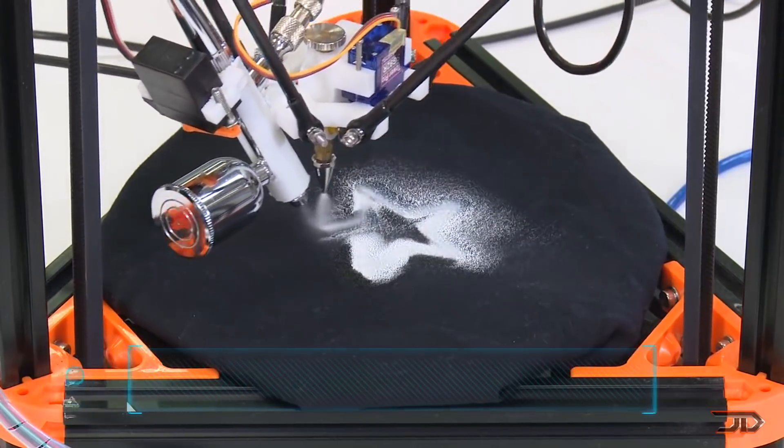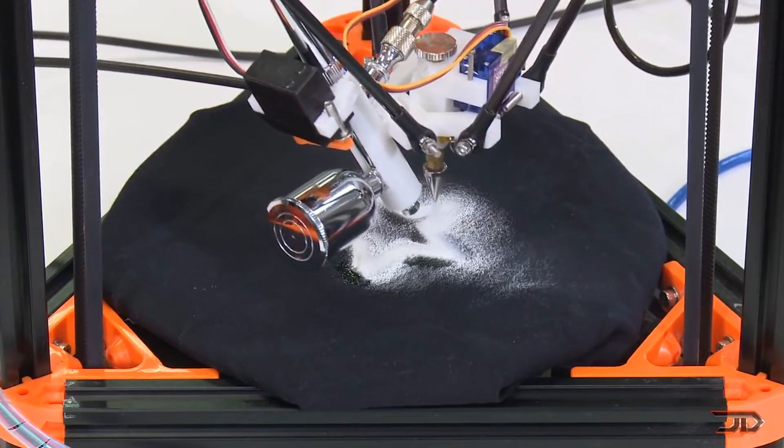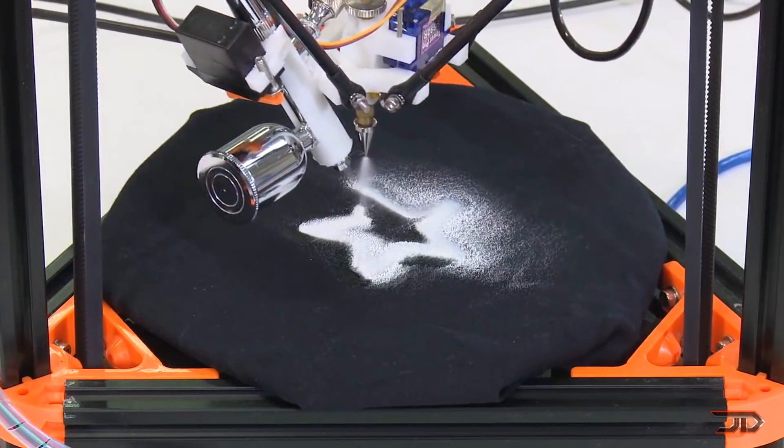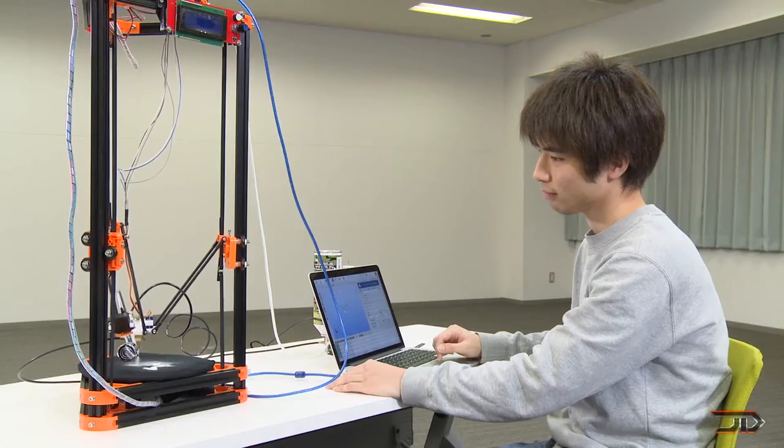It uses a hydrofluorocarbon gas to instantly freeze water that is being extruded. More specifically, it extrudes water through an airbrush and the gas through a secondary airbrush, rather than plastic filament through a heated nozzle.